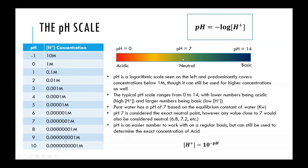The pH scale is a logarithmic scale. A pH of zero means there's a concentration of 1 molar. A concentration of 0.1 molar gives a pH of 1. 0.01 molar gives a pH of 2, and so on. This is where you can get negative pHs: if you have a solution more concentrated than 1 molar, the pH value would go negative.